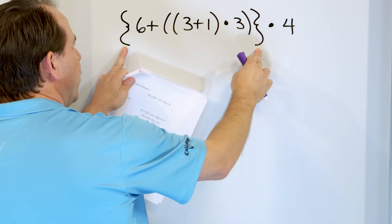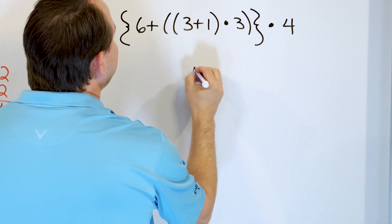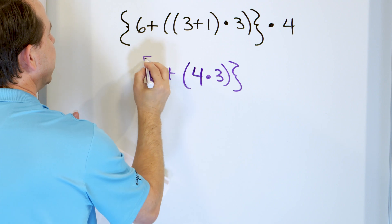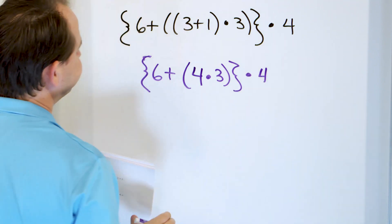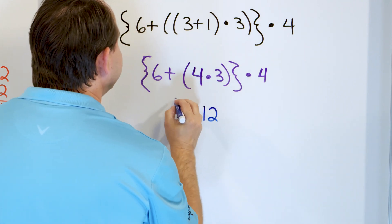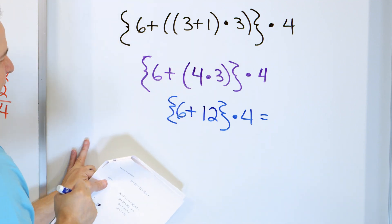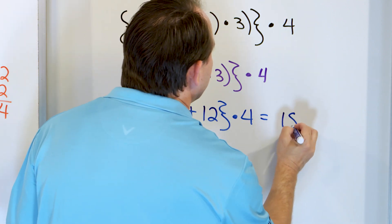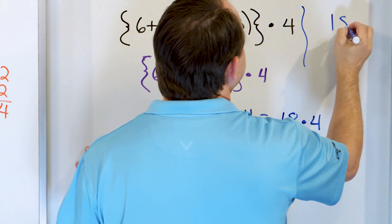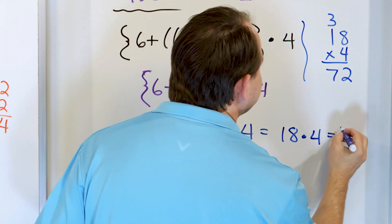We have a set of curly-brace parentheses, we go inside, then another set of parentheses, we go inside, and then another inner set. We must do 3 plus 1 first, which is 4. We drop that inner set of parentheses. Now it's 4 times 3 from here, with the plus 6 and curly brace still to go, and then still times 4. 4 times 3 is 12. We still have the plus 6 inside the curly braces. 6 plus 12 is 18. We drop the curly braces. We still have to multiply by 4. 18 times 4: 8 times 4 is 32, 4 times 1 is 4, plus 3 is 7. The answer is 72. That's the final answer.